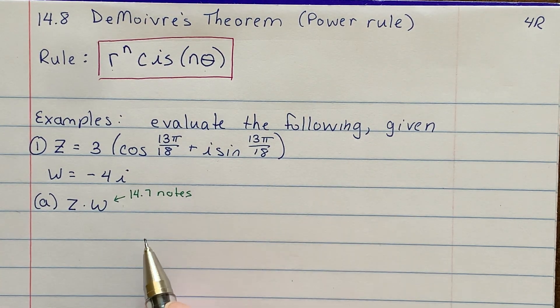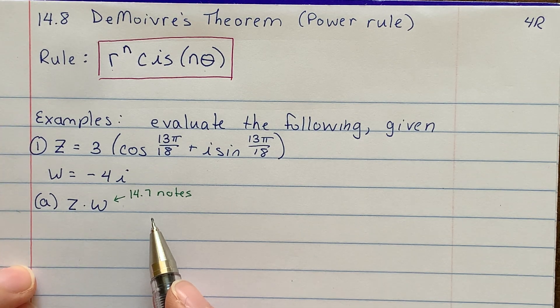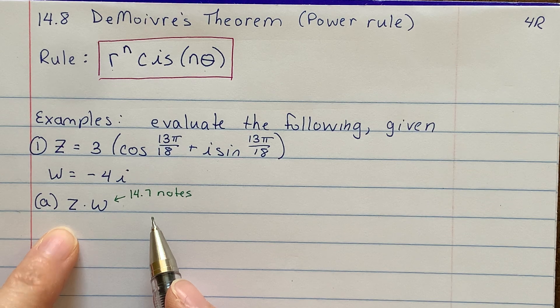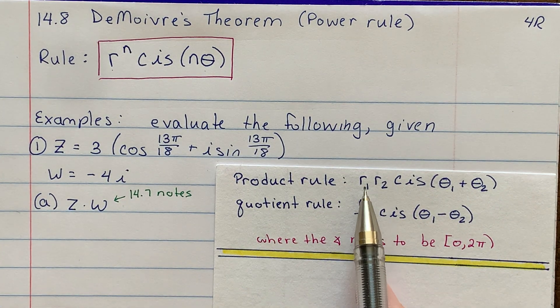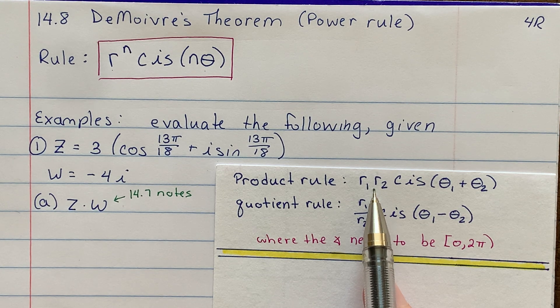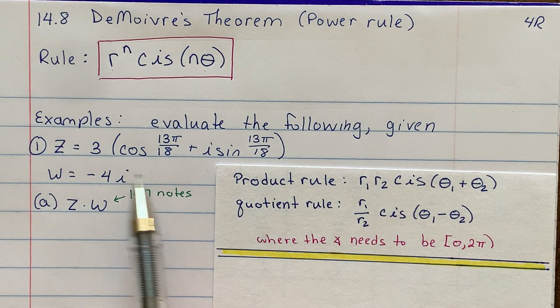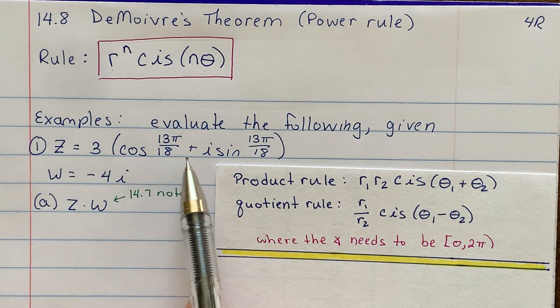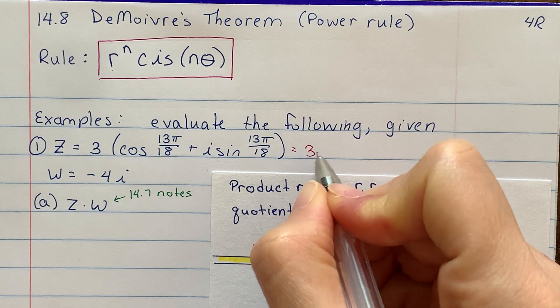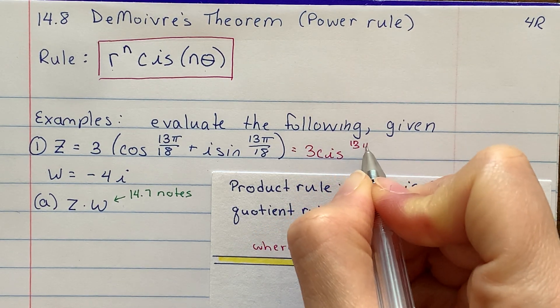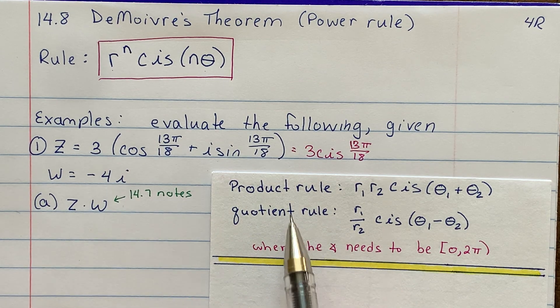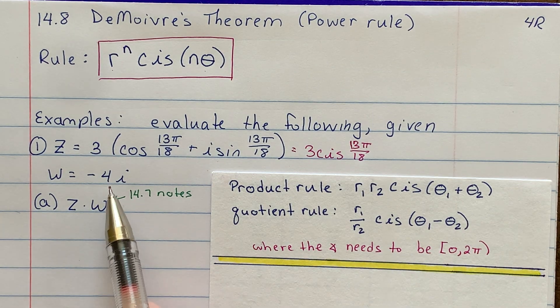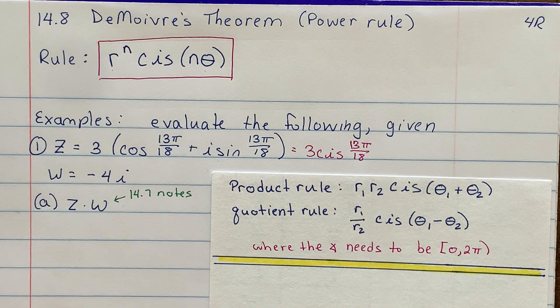So this is from 14.7 notes. I wanted to take a moment just to recap, because multiplying polar values is pretty challenging, and I wanted to practice that with you today before we get into De Moivre's theorem. So let's go back to yesterday's notes here. In order to multiply these together, the product rule says I need r1 times r2. Wait a second. There's a problem here. Do you see what the problem is? I have an r1 value, because here's my 3 cis. I'm going to rewrite this.